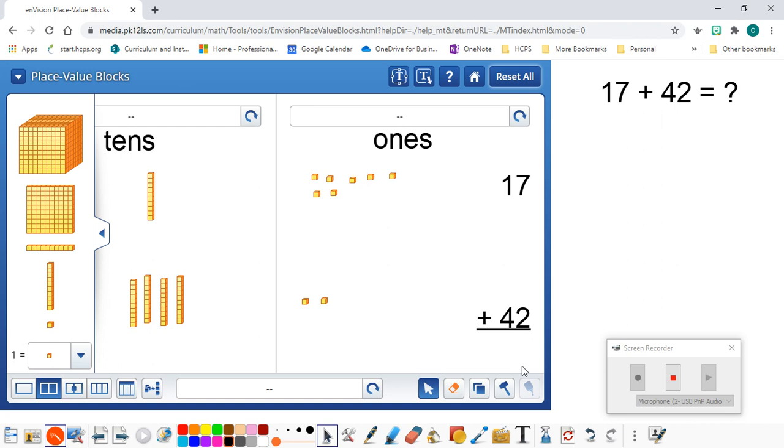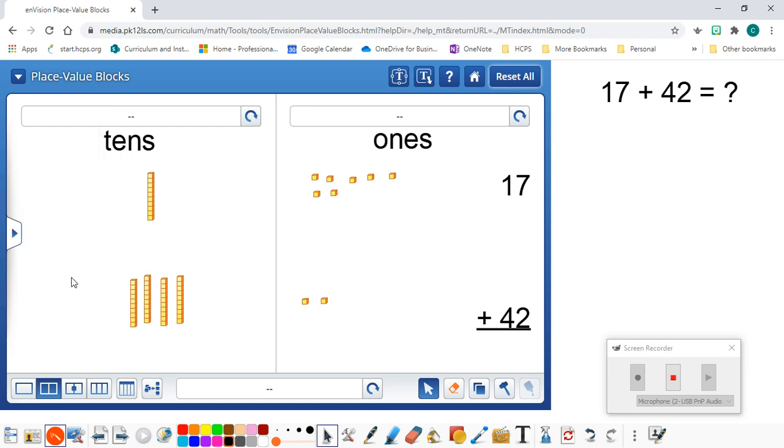Okay? And now, what we're going to do is we're going to add the tens together. So, 10 plus 40 is going to be 50. And you can check your work by hitting this button here, and it tells you what the total is in that column.